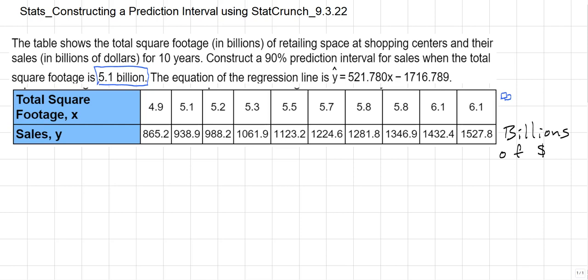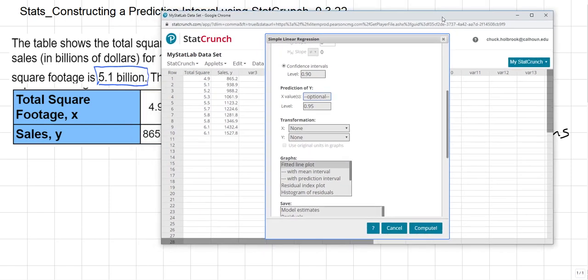Now, when you go and put that in, you realize that you can't put 5.1 billion in there as 5,100,000,000. You're going to put it in as it's stated in the problem, 5.1. However, when we actually determine what our prediction interval is, we need to make sure that the answer that we give is in billions.